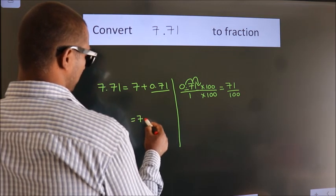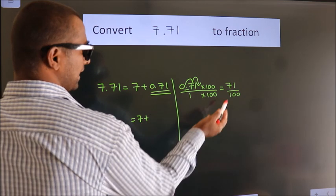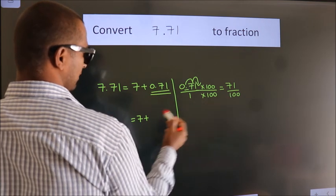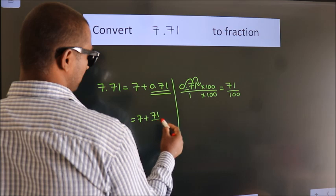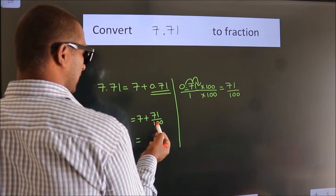7 plus, in place of 0.71, we write this fraction: 71 over 100. 7 plus 71 over 100.